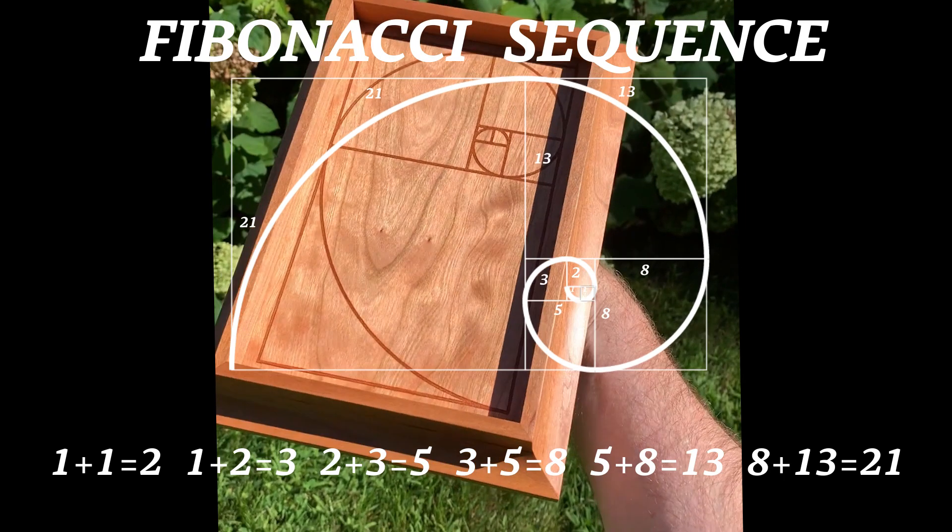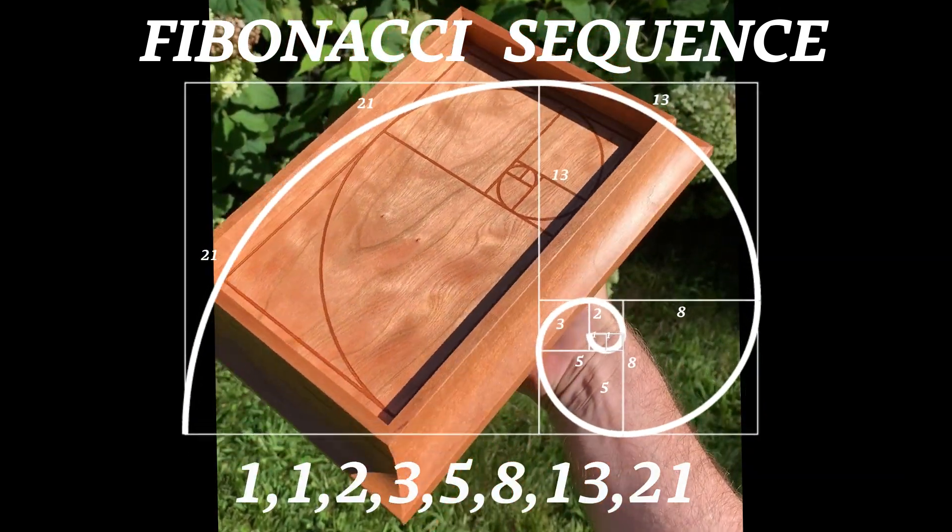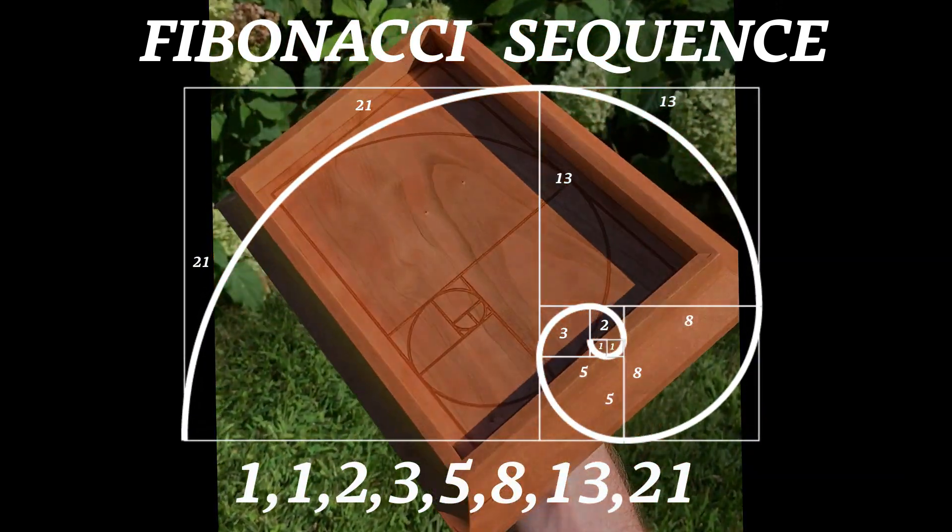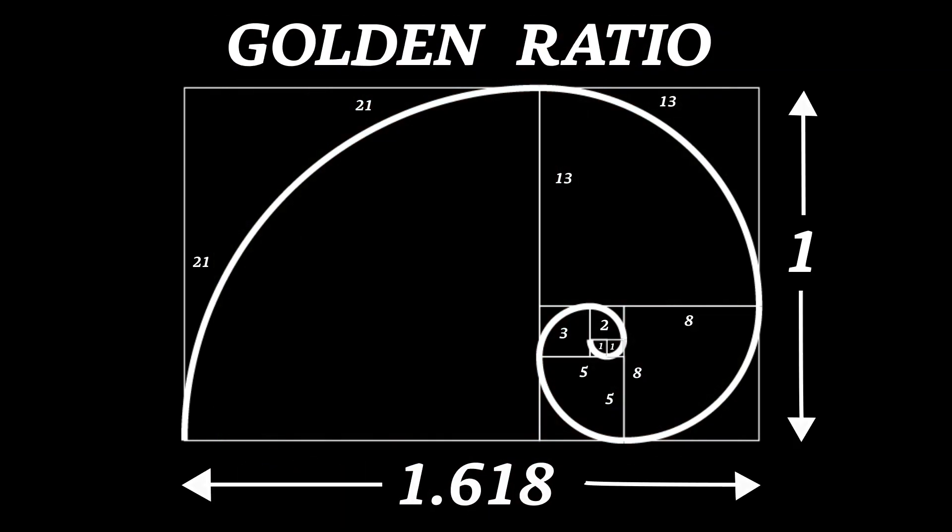Let's talk about the Fibonacci sequence. It's an interesting mathematical equation that you find in historical books and design books and things like that, so I thought I'd talk about it. It's also closely related to the golden ratio.